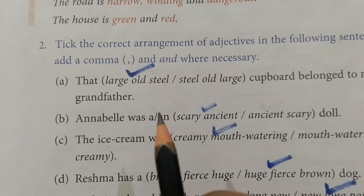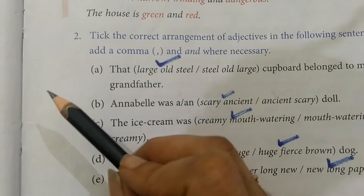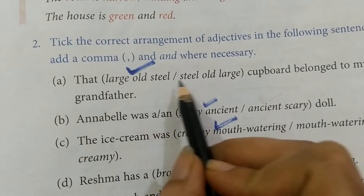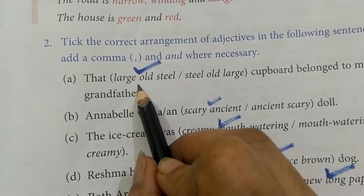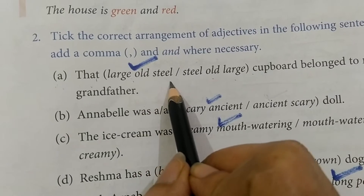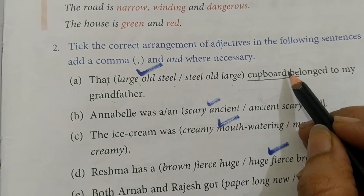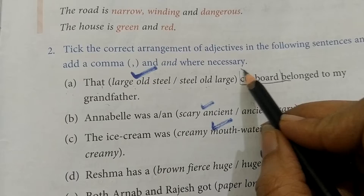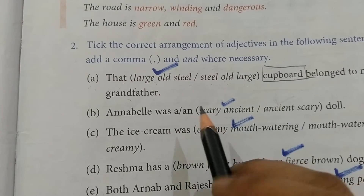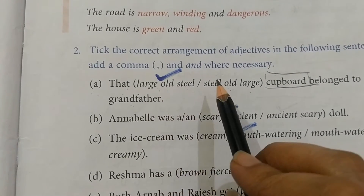In this question you had to first read the sentences, and you can see that in these sentences two options are given in brackets — options for the correct order of adjective used for nouns. Like in the first sentence: 'large old steel' or 'steel old large cupboard belongs to my grandfather.' We are describing the cupboard, and to describe it we are using more than two adjectives — steel, old, large. These are three adjectives. We have to find out which is the correct order.